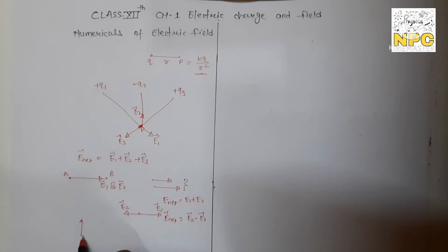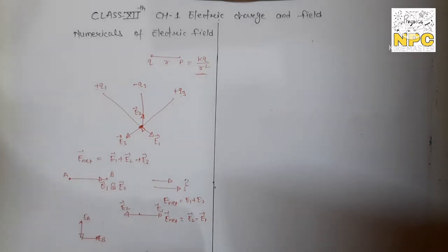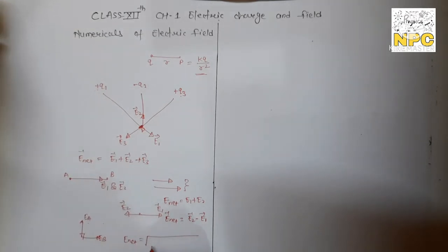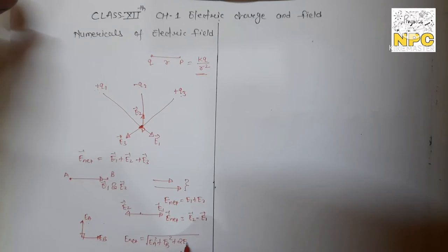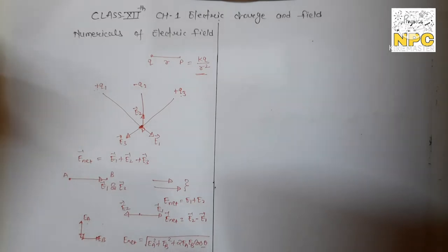If the two electric fields are at some angle theta, then you apply vector rules: E_net = √(EA² + EB² + 2·EA·EB·cosθ). If the angle is 90°, then cos90° = 0, so that term vanishes. These three cases — same direction (add), opposite direction (subtract), and at an angle (vector formula) — are important for the numericals ahead.